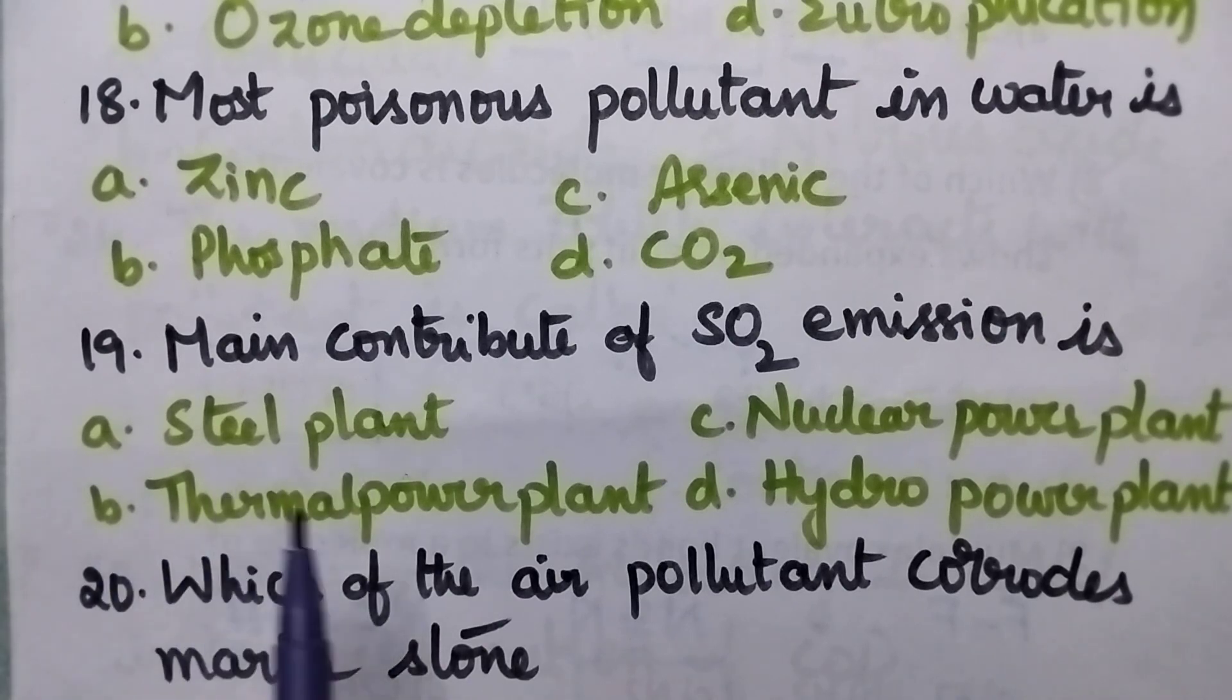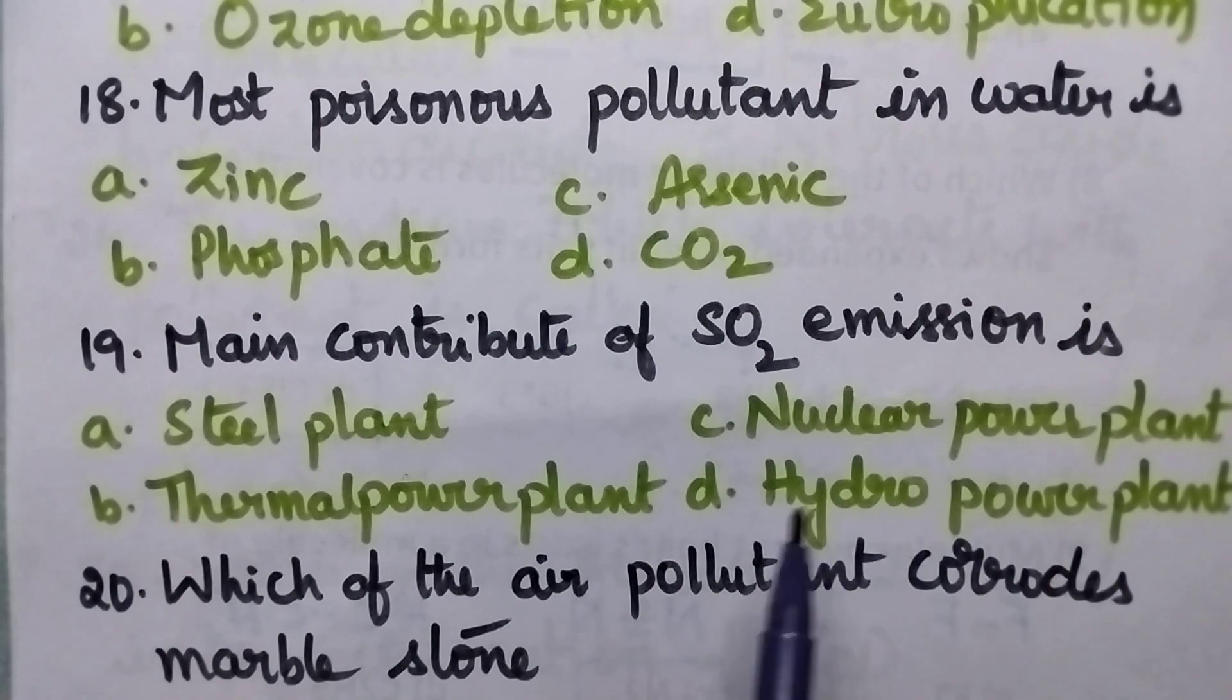Main contributor of sulphur dioxide emission is A: Steel plant, B: Thermal power plant, C: Nuclear power plant, D: Hydro power plant.